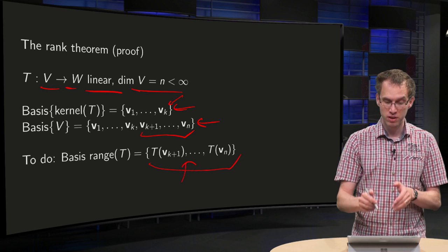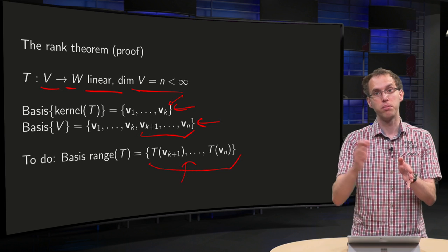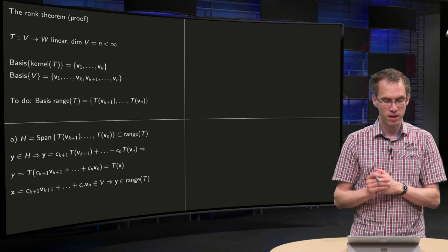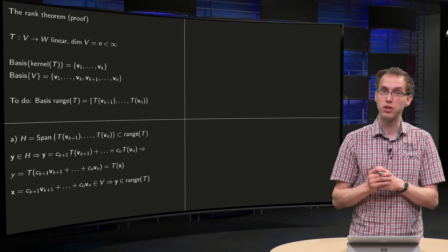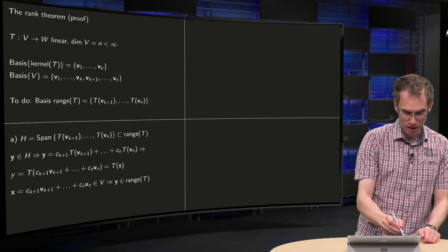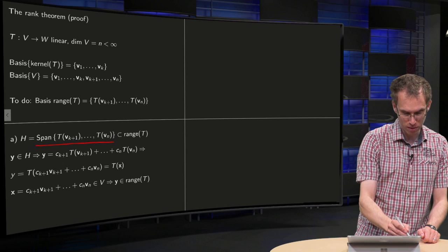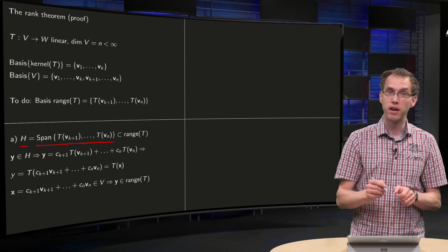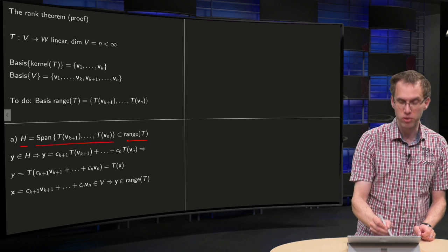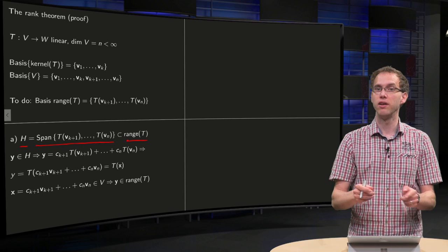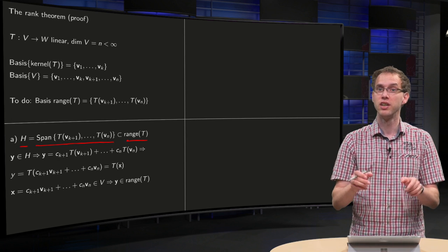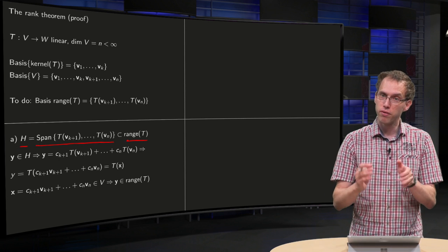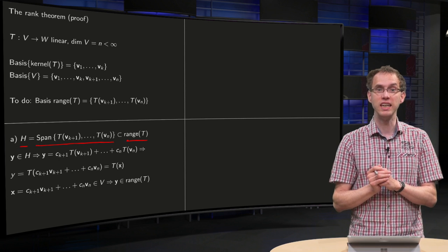We have to show that Tv_{k+1} up to Tv_n form a basis for the range of T. That means we have to show three things. If we let H denote the span of those vectors — just to make the notation smaller — then we have to show that H is contained in the range of T, and vice versa that the range of T is contained in H, so together we have H equals the range of T. But first we show that H is contained in the range of T.